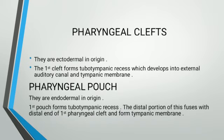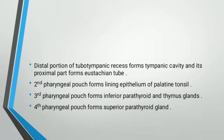Pharyngeal clefts are ectodermal in origin. The first cleft forms the external auditory canal and contributes to the tympanic membrane. Pharyngeal pouches are endodermal in origin. The first pouch forms the tubotympanic recess; its distal portion fuses with the first pharyngeal cleft to form the tympanic membrane, while the proximal part forms the Eustachian tube. The second pharyngeal pouch forms the lining epithelium of the palatine tonsil. The third pharyngeal pouch forms the inferior parathyroid and thymus glands. The fourth pharyngeal pouch forms the superior parathyroid gland.